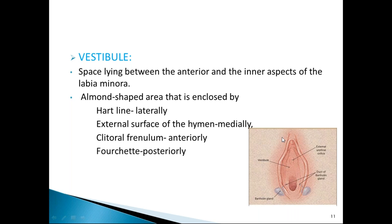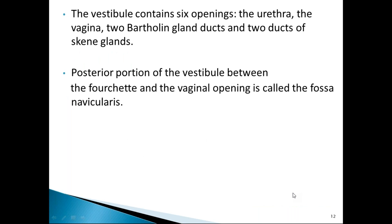The vestibule is an almond-shaped space between the two labia minora with six openings. Its boundaries are: laterally the Hart's line, medially the hymen surface, anteriorly the clitoris, and posteriorly the fourchette. The six openings are: the external urethral meatus, vaginal opening, two Bartholin gland ducts, and two ducts of Skene's glands or para-urethral glands. The fossa navicularis is also noted.